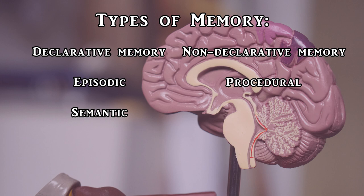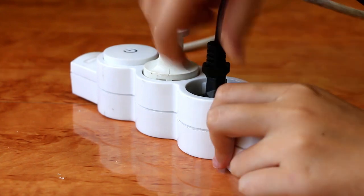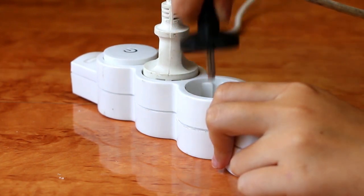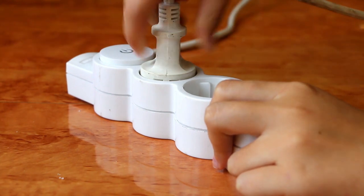In contrast, both episodic and semantic memories are considered declarative, meaning that you can consciously recollect the information associated with them. Now that we have discussed the basic types of memory, we are ready to talk about types of amnesia.